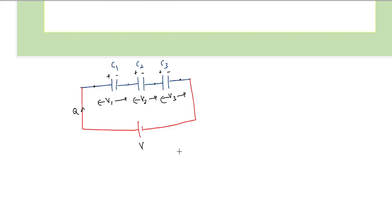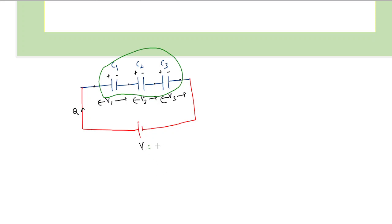The purpose here is to find the equivalent capacitance, which means we need to replace all the capacitors with a single capacitor. For example, think of a battery providing 5 volts causing a charge of 10 microcoulombs to flow — this battery supplies 5 volts and the charge flowing is 10 microcoulombs.